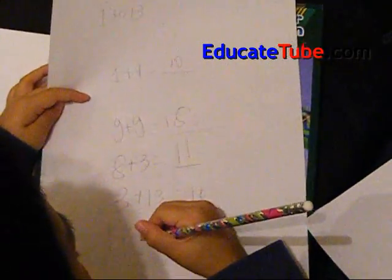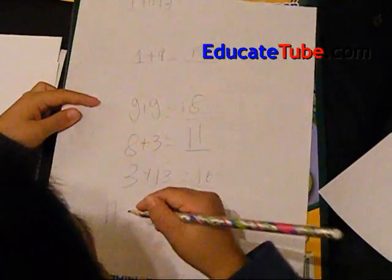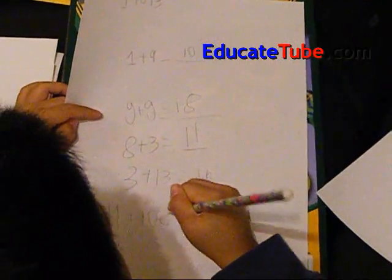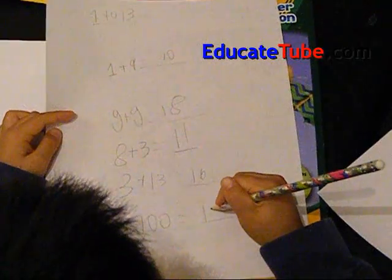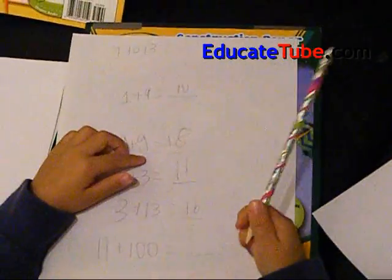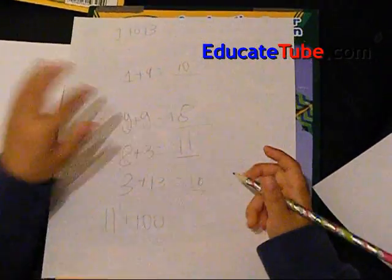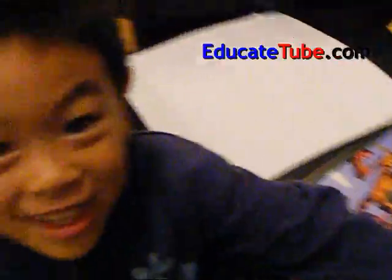This is going to get complicated. 11 plus 100 equals 111. Bye. You'll see you soon next time for the next math.